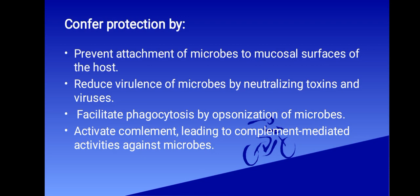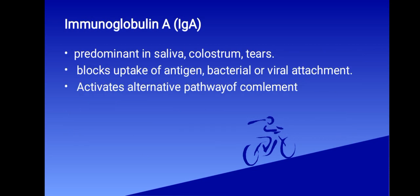Now we are going to look at the different antibodies, beginning with immunoglobulin A. IgA is the predominant immunoglobulin in colostrum, saliva, tears, bronchial secretions, mucosal prostatic fluid, vaginal secretions, as well as the mucosal secretions of the small intestines. They block the uptake of antigen and bacterial and viral attachment, and they limit the inflammation induced by classical pathway complement activation. They also promote microbial destruction through ADCC by binding to leukocyte receptors.